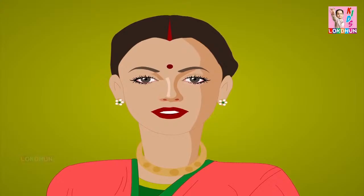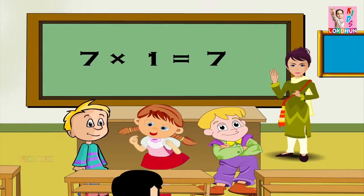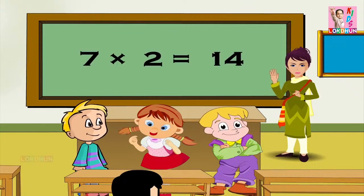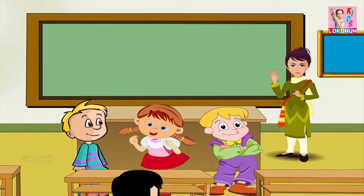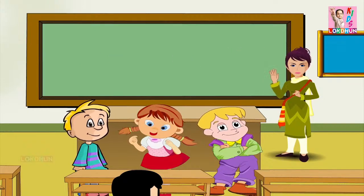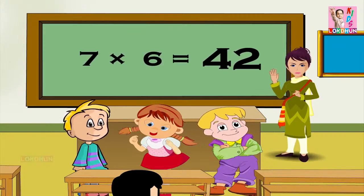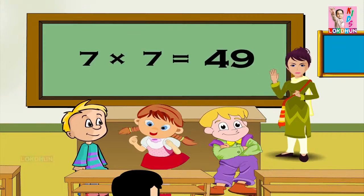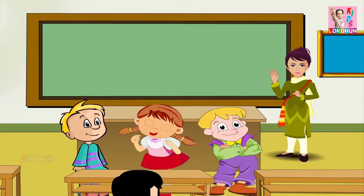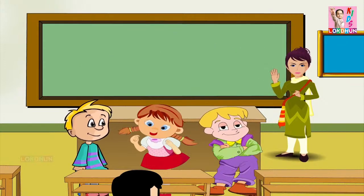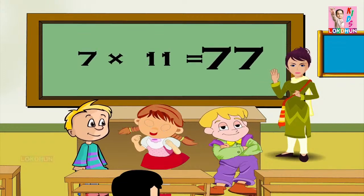Turn children. 7 1s are 7, 7 2s are 14, 7 3s are 21, 7 4s are 28, 7 5s are 35, 7 6s are 42, 7 7s are 49, 7 8s are 56, 7 9s are 63, 7 10s are 70, and 7 11s are 77.